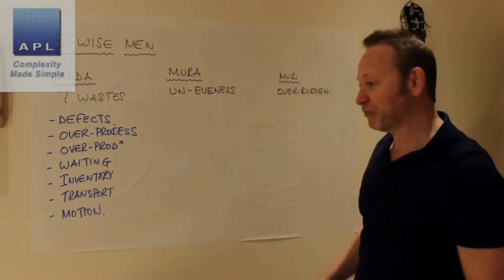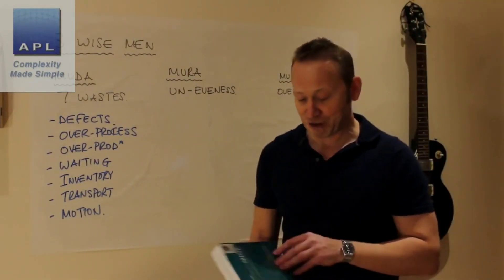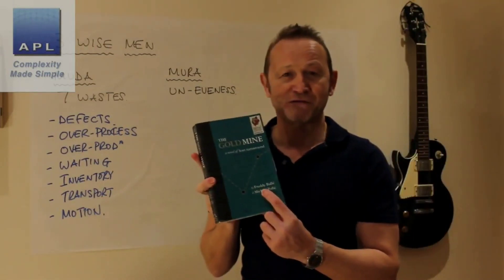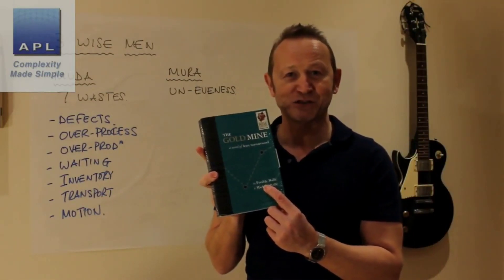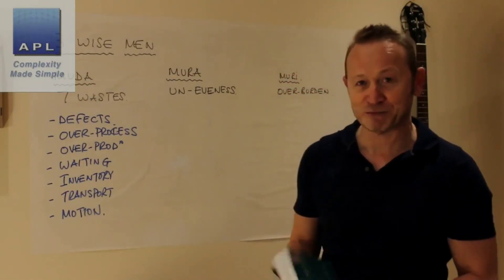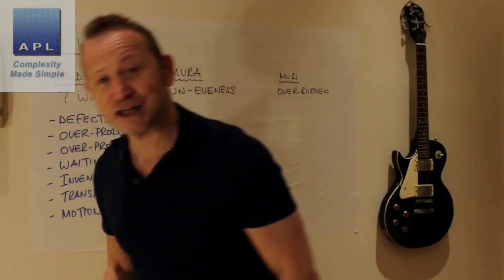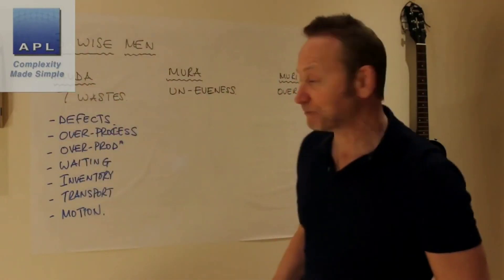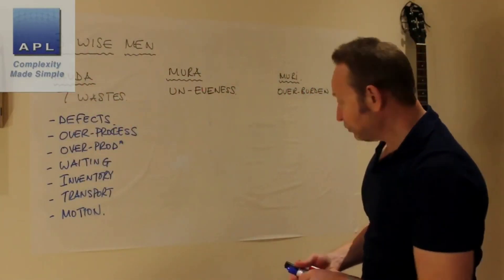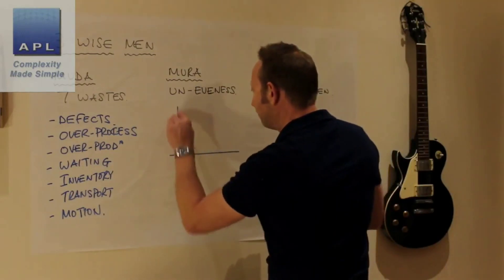'The Gold Mine' is by Freddy Ballé — B-A-L-L-E. It's a great book to show you how to do proper lean implementation. So let's look at these two: unevenness and overburden. What are we typically talking about with unevenness?